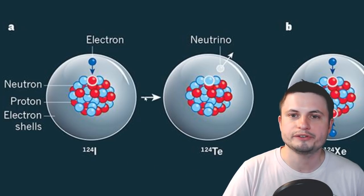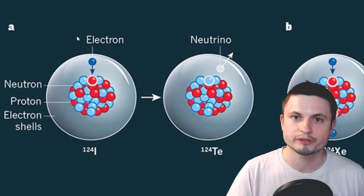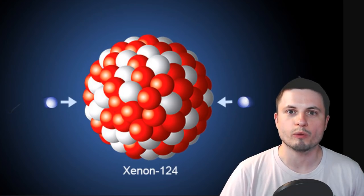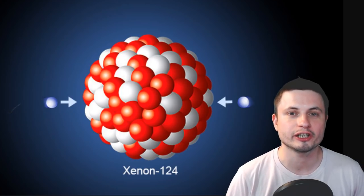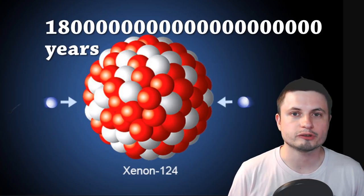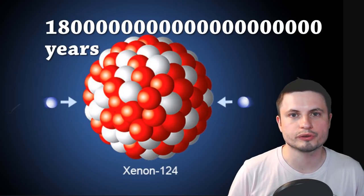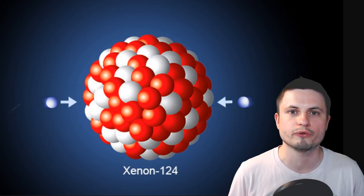Well, so for Xenon-124, we have now, because of this event, we're able to calculate the half-life of this isotope to be 1.8 sextillion years. That's 1.8 followed by 20 zeros years. And that's for half of those atoms to turn into tellurium-124.